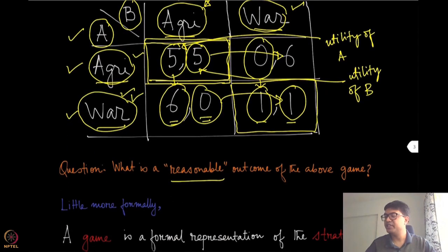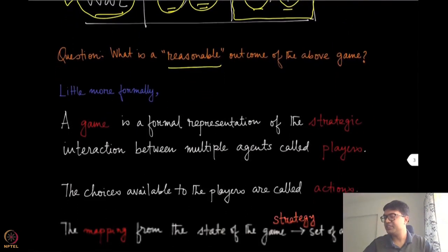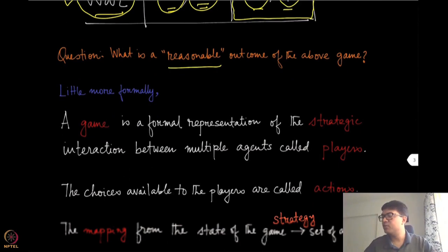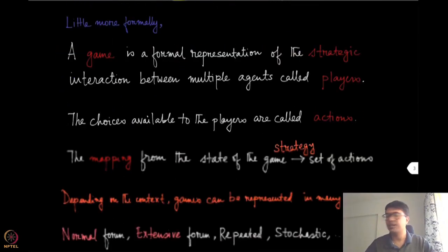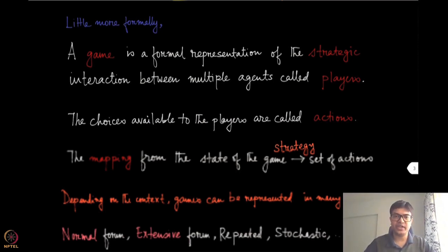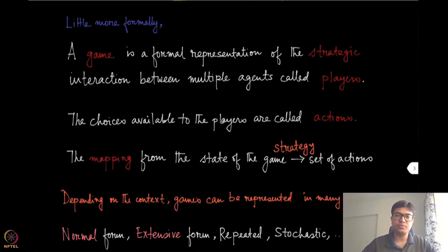A game theorist will say that (war, war) is the most predictable outcome. Now let's make the terminology a little more formal. A game is a formal representation of the strategic interaction between multiple agents called players. The choices that are available to these players are called actions — in this example, agriculture or war were the two possible actions.